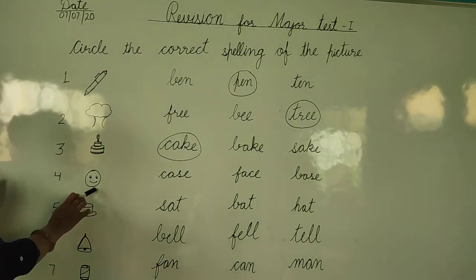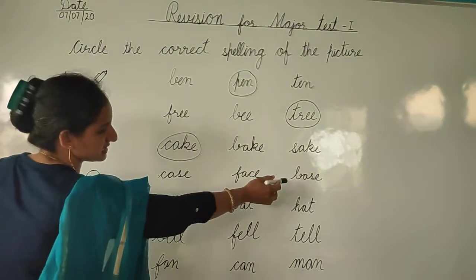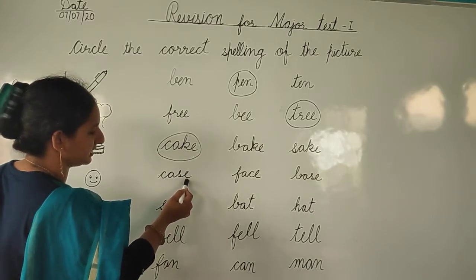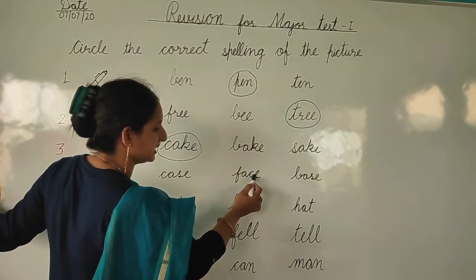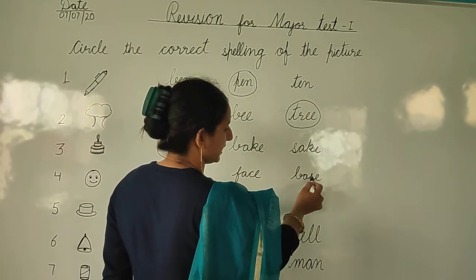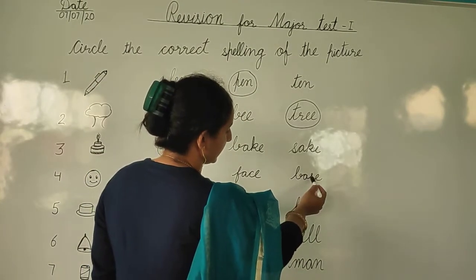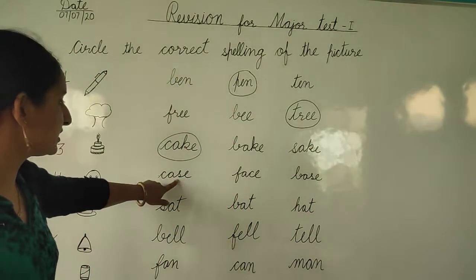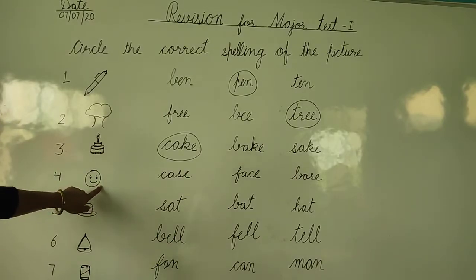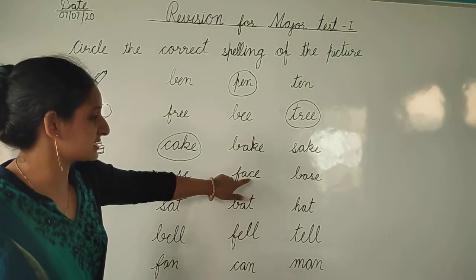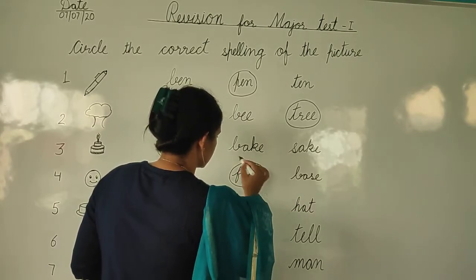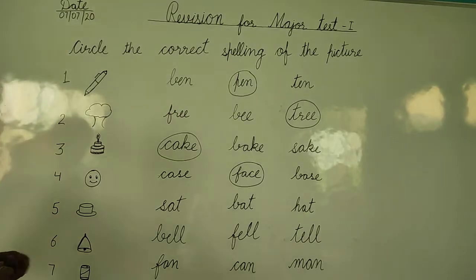Next — identify this picture. This is a face. Now we will read these words: C-A-S-E — Case; F-A-C-E — Face; B-A-S-E — Base. Case, face, base. Now look at this picture — this is a face. The spelling of face is F-A-C-E. So we will make a circle on this spelling.